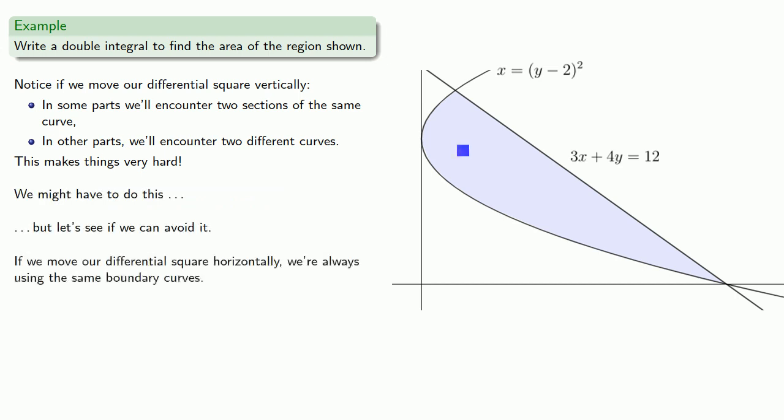And notice that if we move our differential square horizontally, we're always using the same boundary curves. On the left hand side, it's always the parabola, and on the right hand side, it's always the straight line. And this makes it easier.